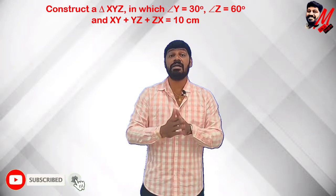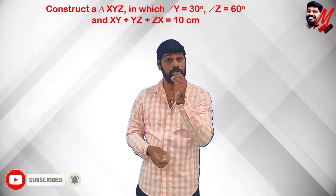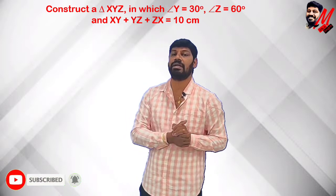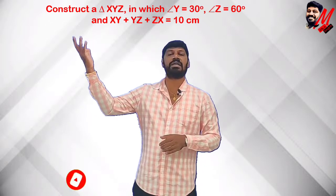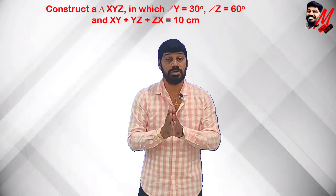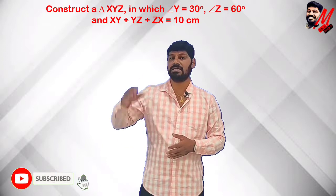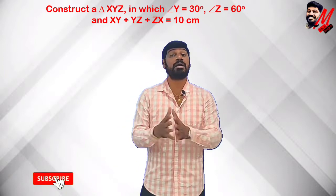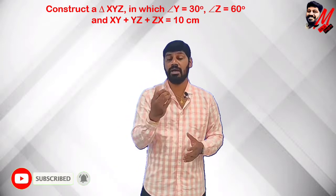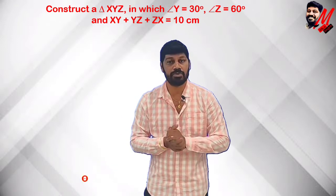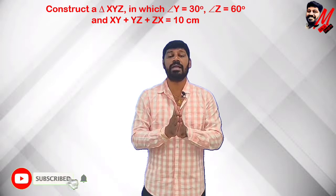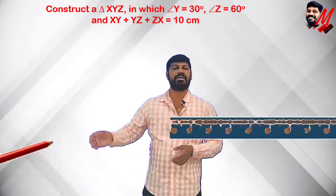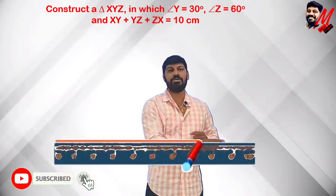The given values are: angle Y = 30°, angle Z = 60°, and XY + YZ + ZX = 10 cm. We have only one numerical length, that is 10 cm, and two angles. So we draw a line segment Y'Z' of length 10 cm as our base.